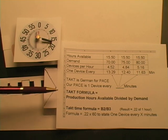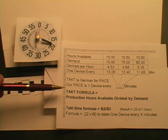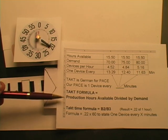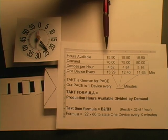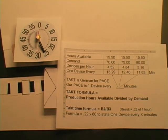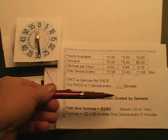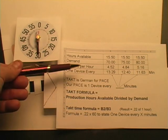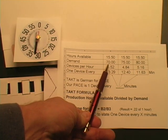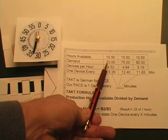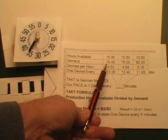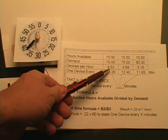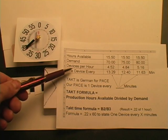The TAC time formula states that we take our production hours available — here we have 15.5 hours, which is two eight-hour shifts — divided by our demand. We need 70 devices in our two shifts per day, which equals 4.52 devices per hour.